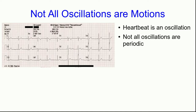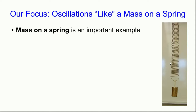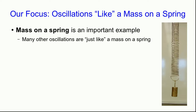Also, not all oscillations are periodic. For example, the El Niño Southern Oscillation, which is a climate oscillation, is an example of a chaotic oscillation. But we're going to focus on oscillatory motions of objects, and furthermore we're going to focus on a particular type. These are oscillations that are like what a mass on a spring does. It's an important example, and it's partly because many other oscillations are, vaguely, just like a mass on a spring. You'll see what I mean as we go on.